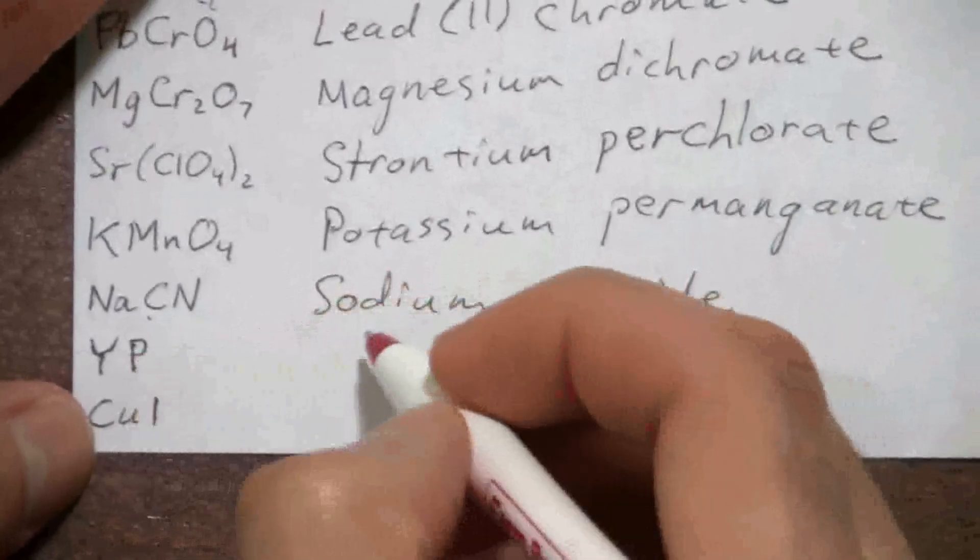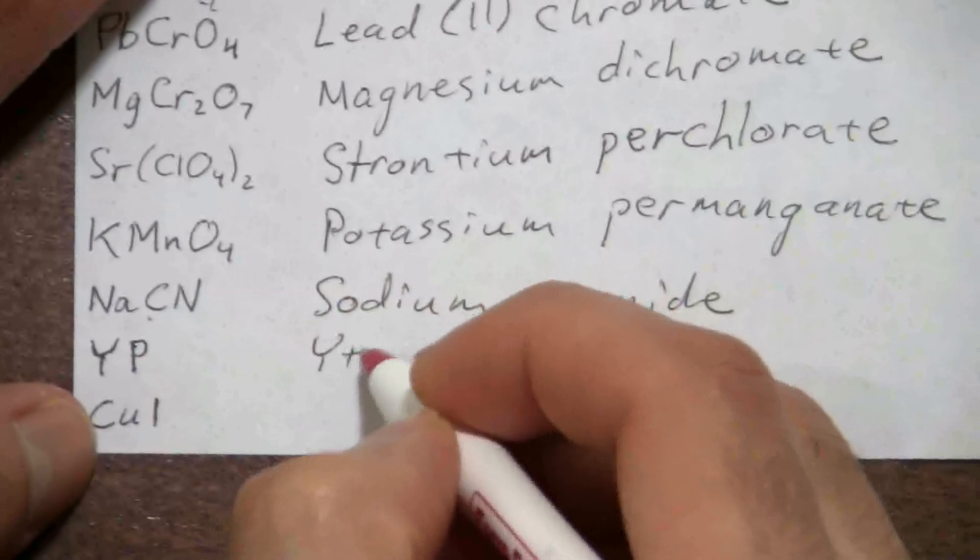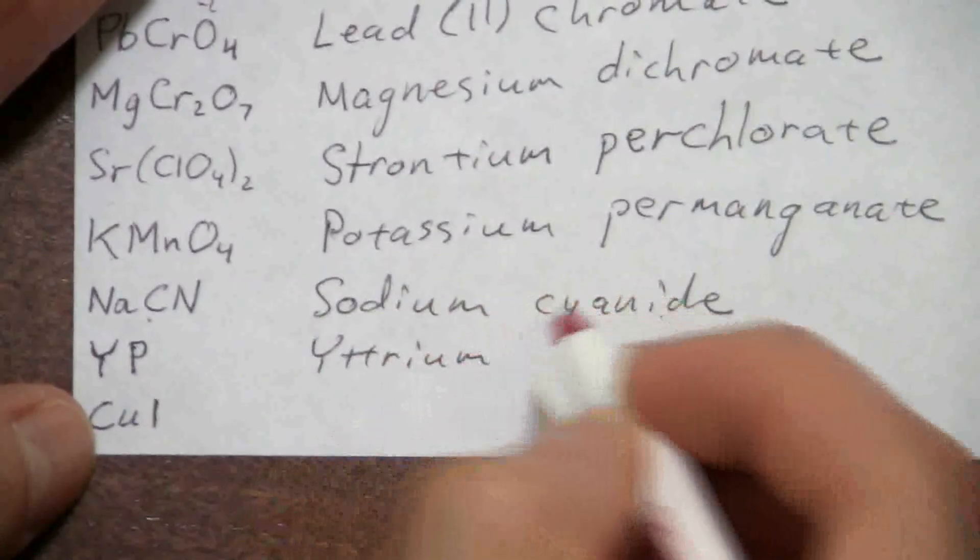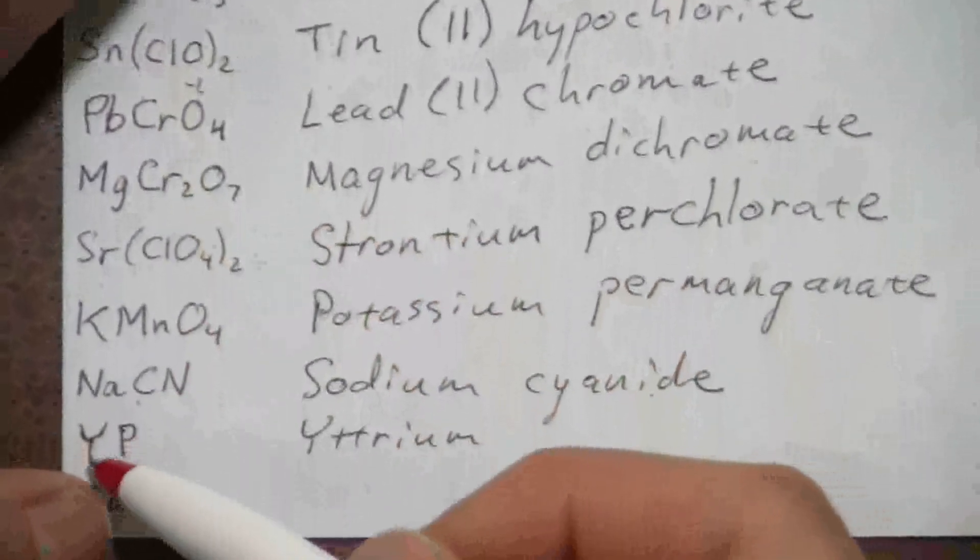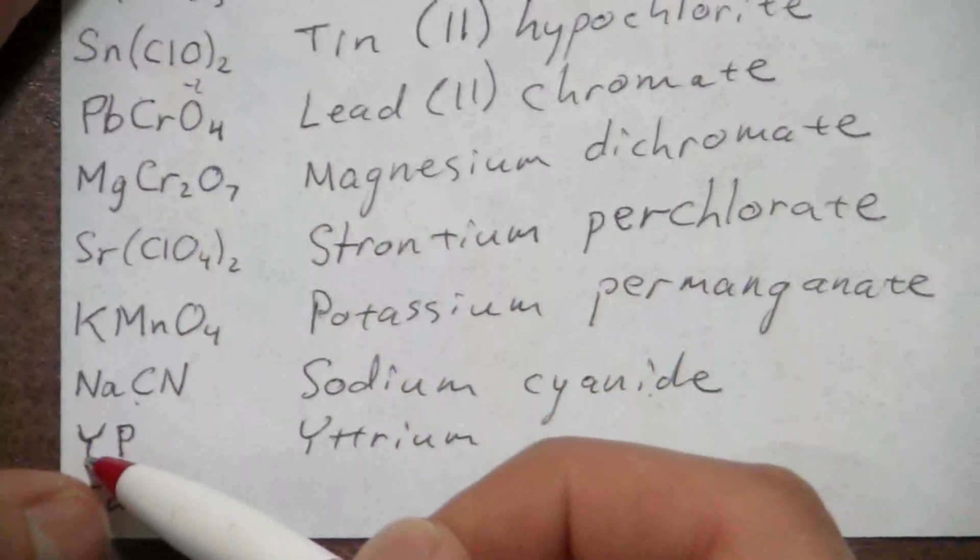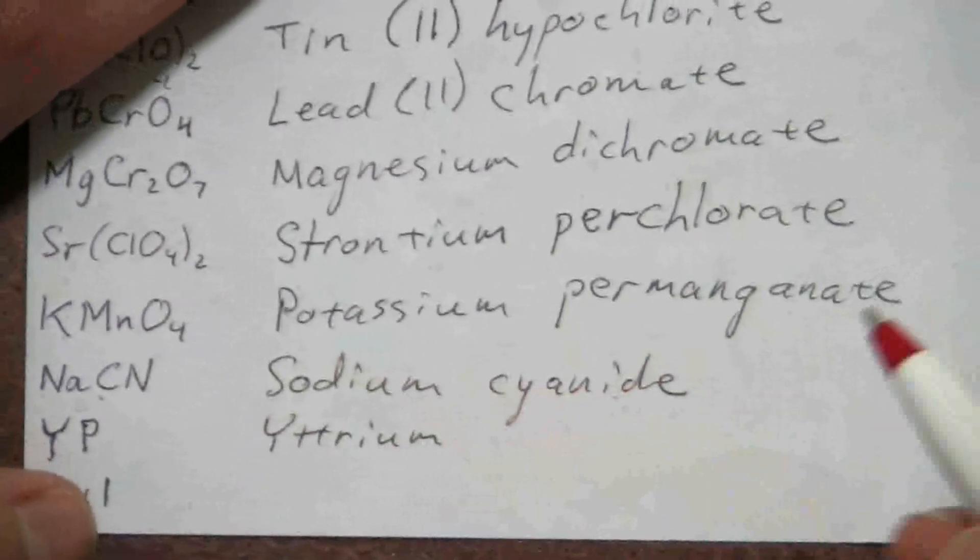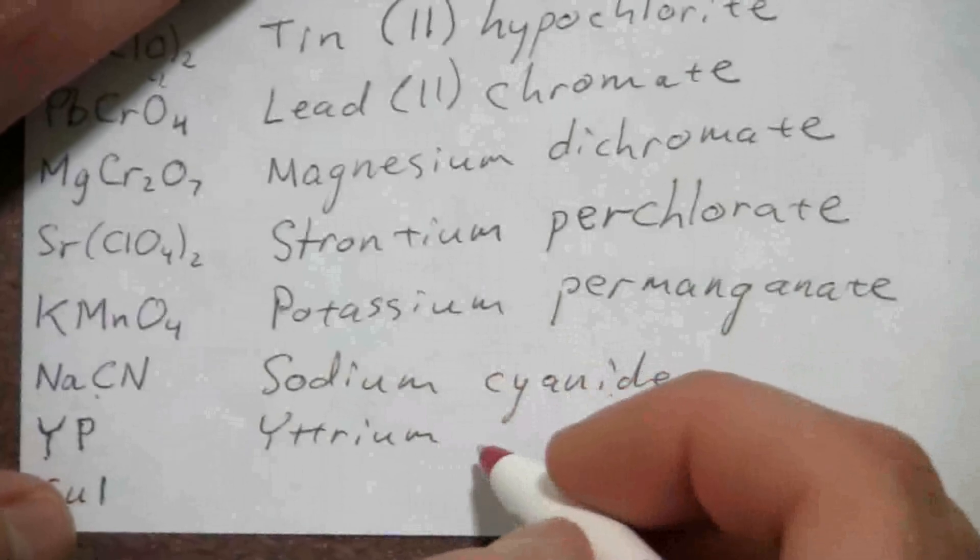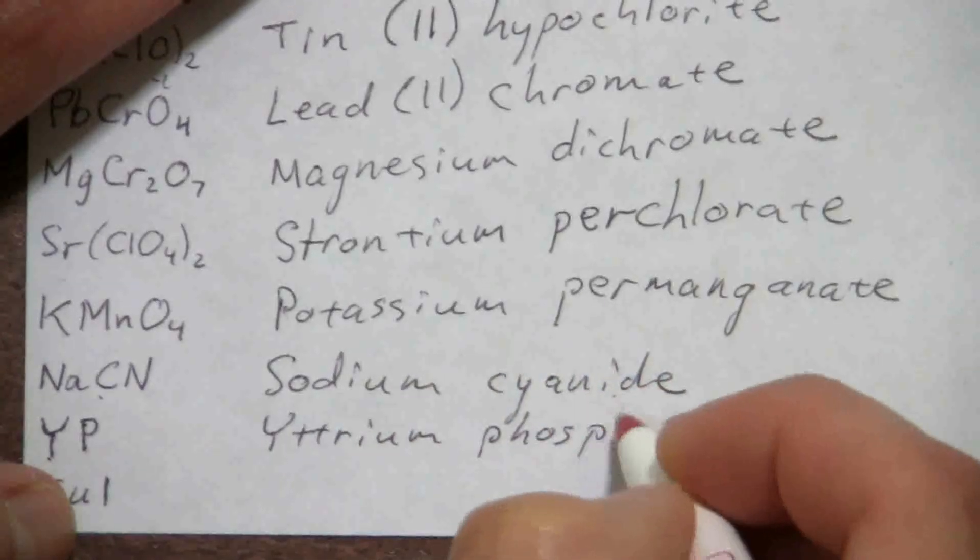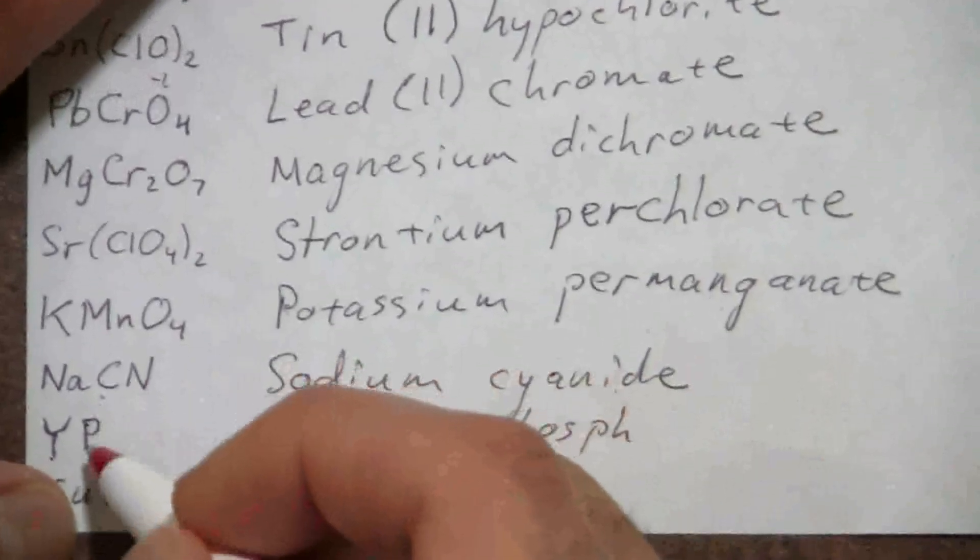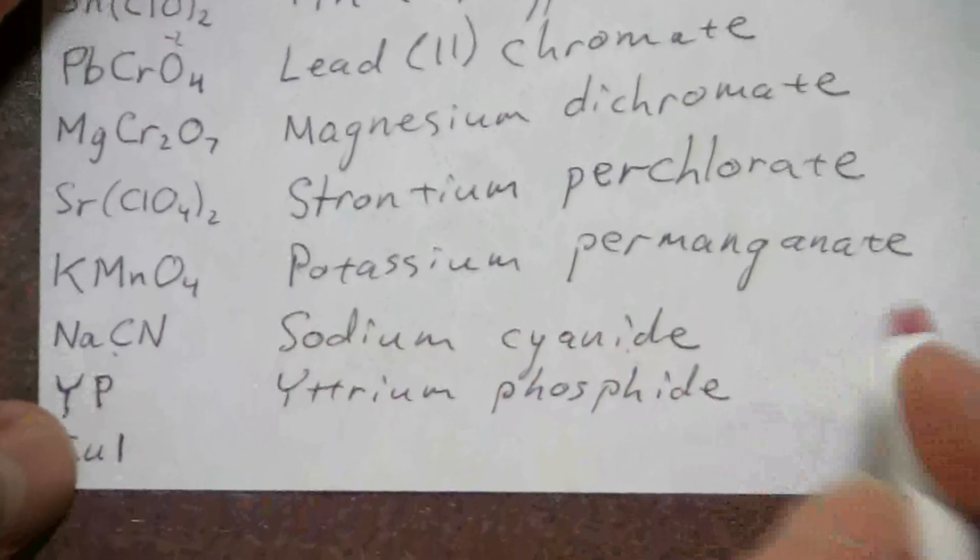Okay, and here we have YP. Y is yttrium, and it is underneath scandium. And even though it's a transition metal, it's in that first column where it's fixed at plus three, so we don't need to write the charge. It's just yttrium, and then phosphide, and it's a monatomic anion, so we end that one in IDE.